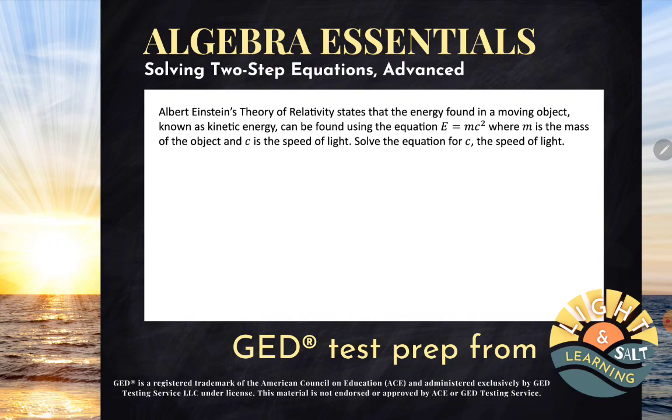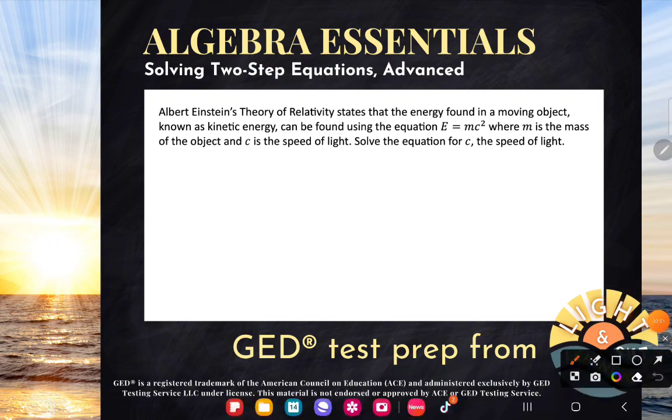Solve the equation for c, the speed of light. Now, the first thing doesn't look too bad. Solve the equation. We know the equation E equals mc squared. And they're telling me to solve the equation for c, meaning they want me to get c alone so I can know what it's equal to.